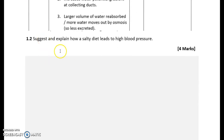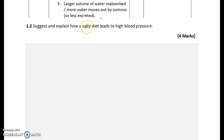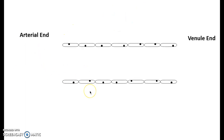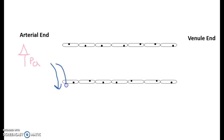The next question asks how a salty diet leads to high blood pressure. We can discuss this in terms of tissue fluid formation, where we encounter hydrostatic pressure. Looking at a capillary - with the arterial end and the venule end - contraction of the left ventricle produces a very high hydrostatic pressure at the arterial end. This high pressure forces water out, bathing the cells and forming tissue fluid.